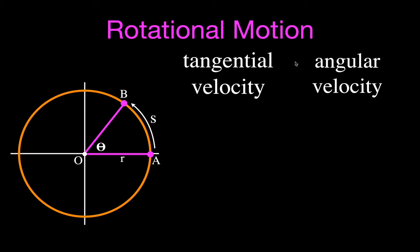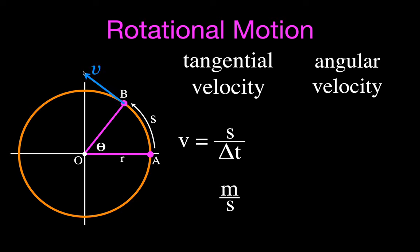Now we can talk about velocity — the tangential and the angular velocity. The tangential velocity is simply the distance the object travels along the arc length divided by the time it takes. We're calculating the speed of the object along the circle, but we still use the symbol v and call it the tangential velocity, measured in meters per second. We call it tangential because when an object moves in a circular path, its velocity is tangent to the curve.